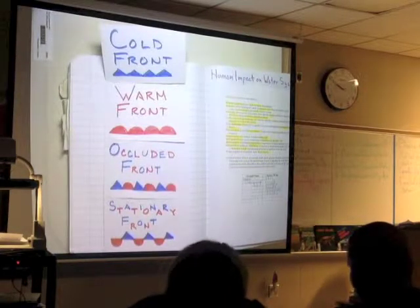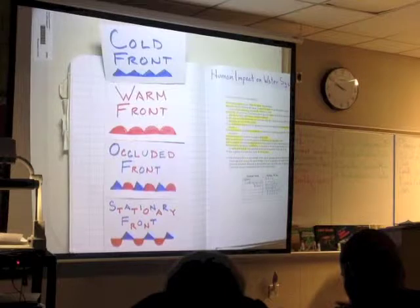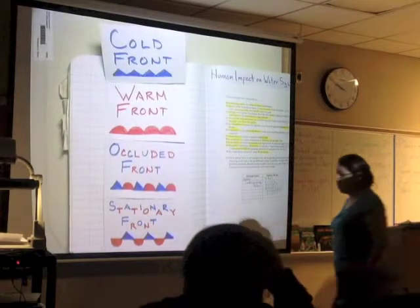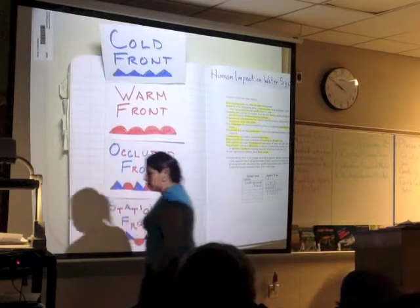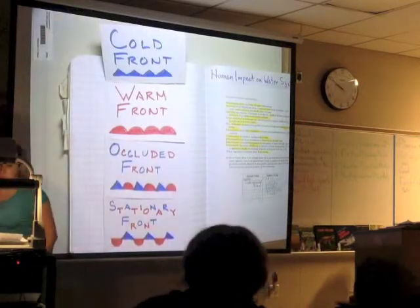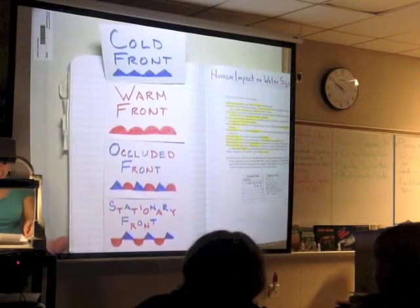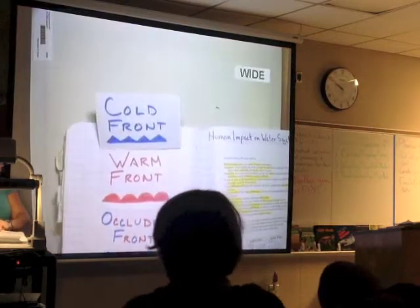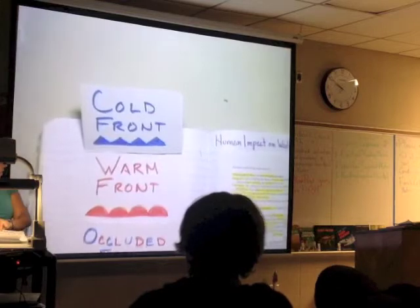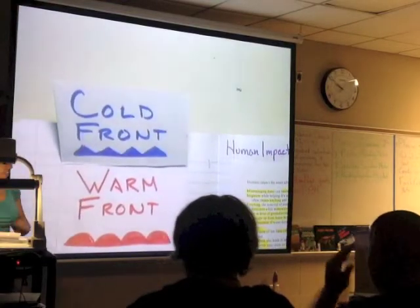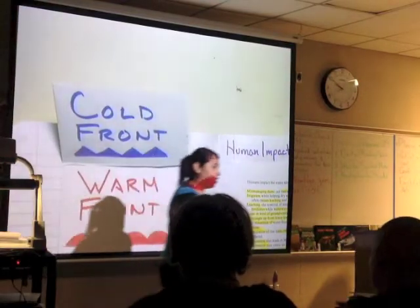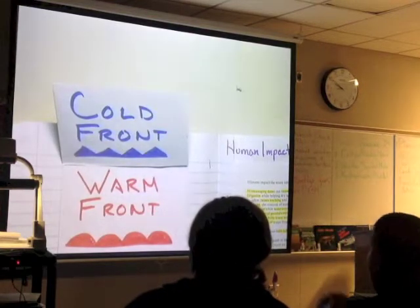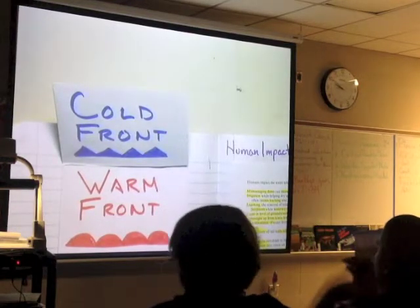The first thing we're going to look at is the different fronts, and these symbols are ones you will see on a weather map. We're going to start with the cold front. The cold front is always going to be blue, and you're always going to see little triangles. Think of those little triangles as icicles.